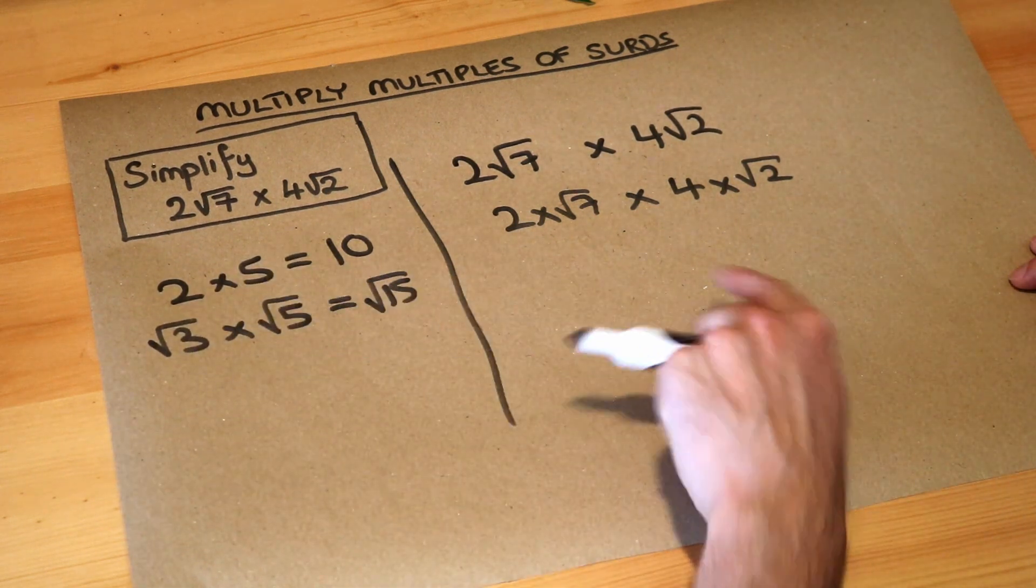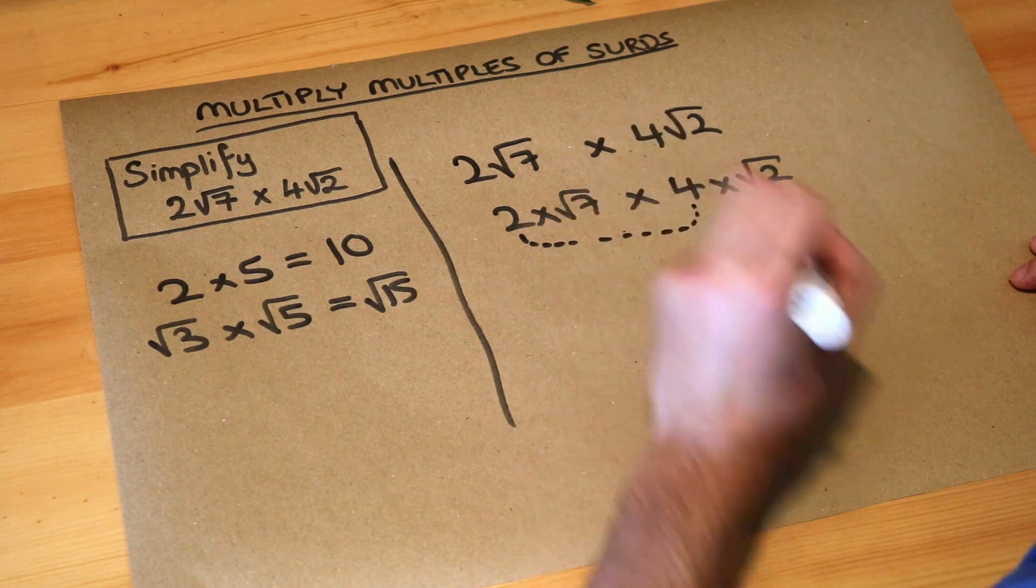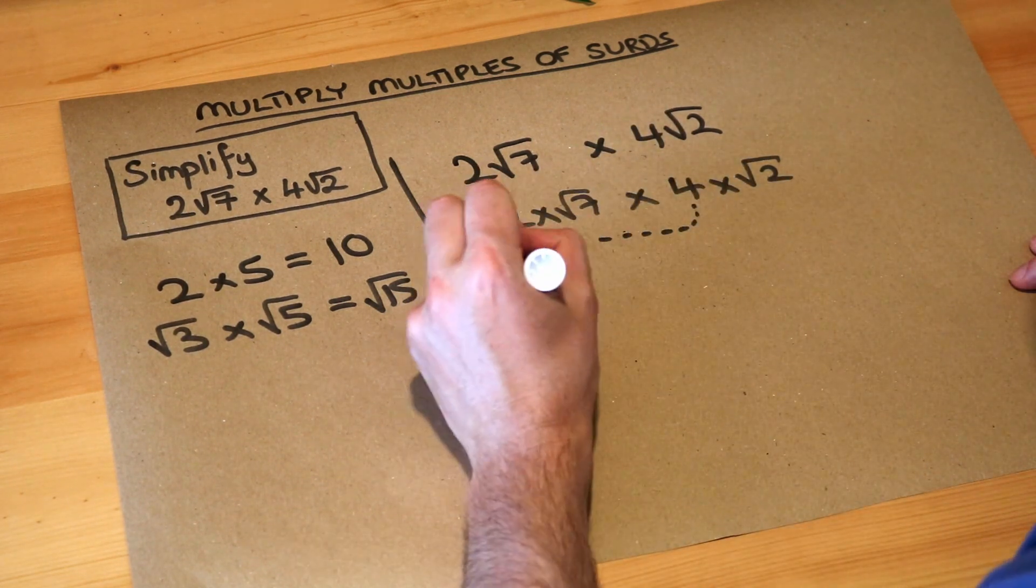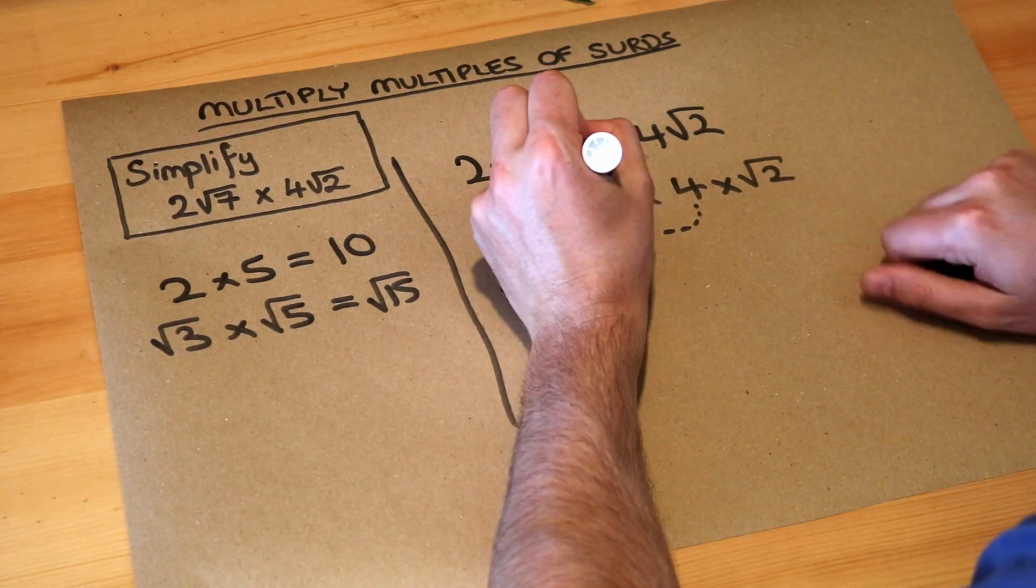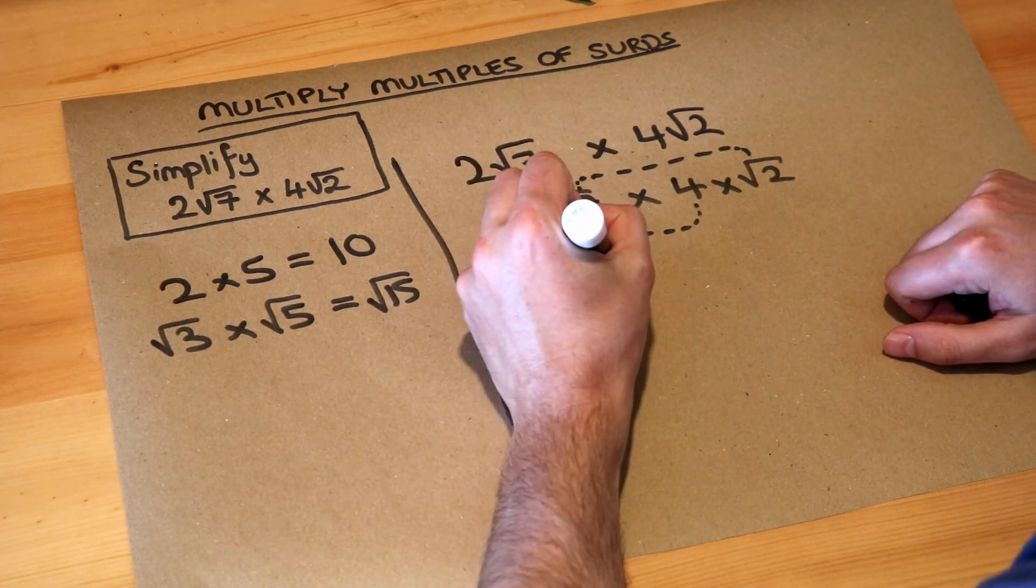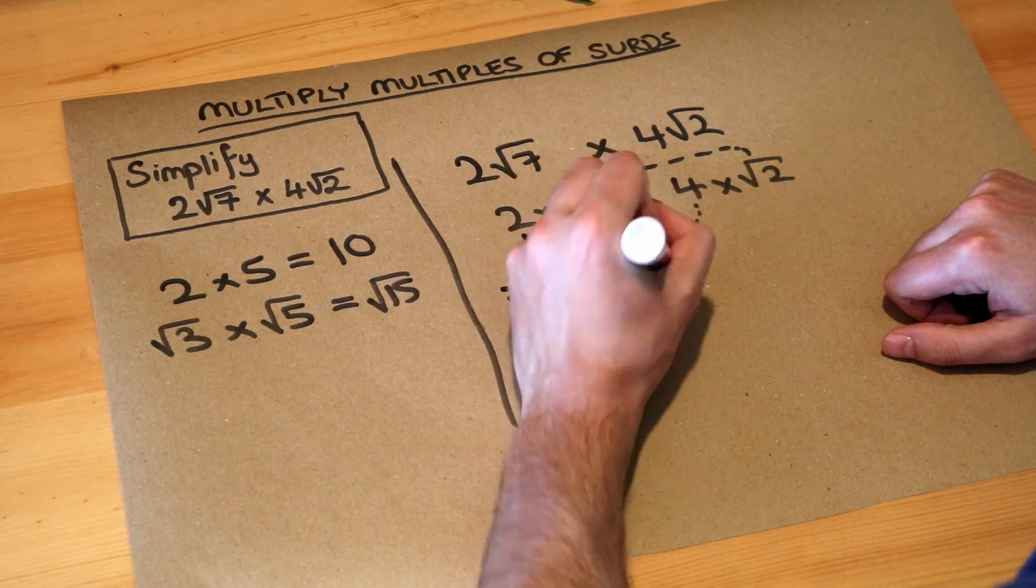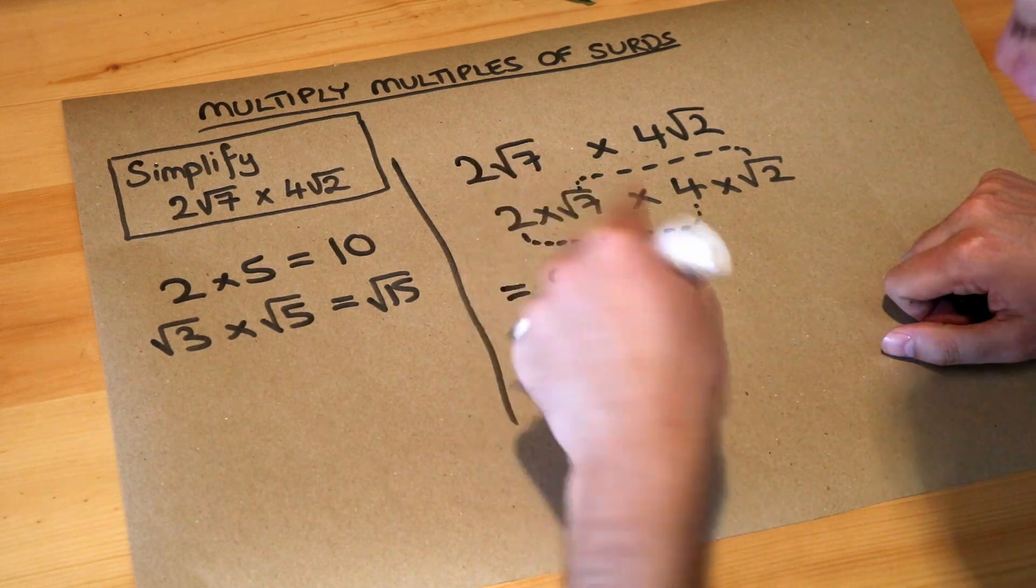So we can use this principle here. We can multiply the non-surds together, so the two times the four is equal to eight. And you can multiply the surds together, so the root seven and the root two they multiply to give root 14. We don't need the multiply symbol in between because eight root 14 just means eight times root 14, and then we're done, we've simplified it.